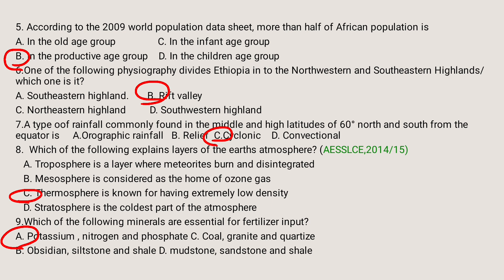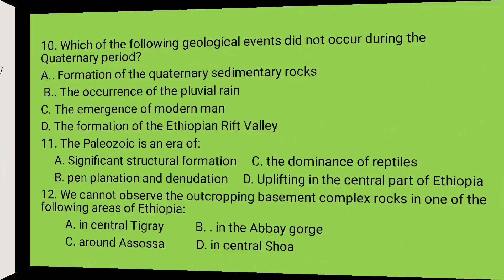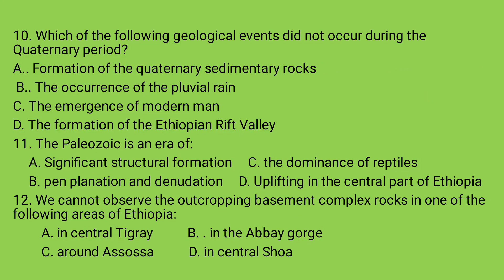Question number ten: Which of the following geological events did NOT occur during the Quaternary Period? A) Formation of Quaternary sedimentary rocks, B) The occurrence of pluvial rain, C) The emergence of modern humans, D) The formation of the Ethiopian Rift Valley. The answer is D — the formation of the Ethiopian Rift Valley, which was formed during the Tertiary Period of the Cenozoic Era. Question number eleven: The Paleozoic Era is an era of: A) significant structural formation, B) peneplanation and denudation, C) dominancy of reptiles, D) uplifting in the central part of Ethiopia. The answer is B — peneplanation and denudation is the event of the Paleozoic Era.